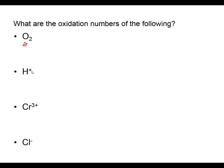The hydrogen cation is a monoatomic cation, so its oxidation number happens to be the same as the charge - plus one. The chromium 3 cation is also a monoatomic cation, so the oxidation state for chromium is a plus three. For the chloride ion, the oxidation number for chlorine is a negative one.